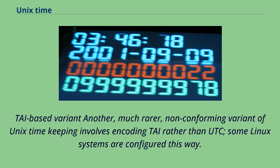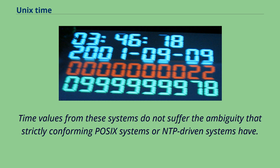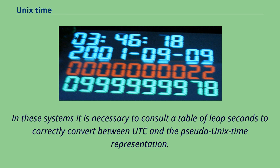TAI-based variant: Another, much rarer, non-conforming variant of Unix timekeeping involves encoding TAI rather than UTC. Some Linux systems are configured this way. Because TAI has no leap seconds, and every TAI day is exactly 86,400 seconds long, this encoding is actually a pure linear count of seconds elapsed since 1971-01-01T00:00:00 TAI. This makes time interval arithmetic much easier. Time values from these systems do not suffer the ambiguity that strictly conforming POSIX systems or NTP-driven systems have. In these systems it is necessary to consult a table of leap seconds to correctly convert between UTC and the pseudo-Unix time representation.